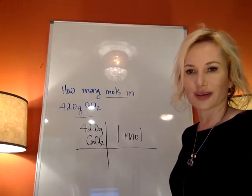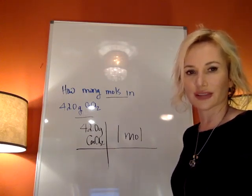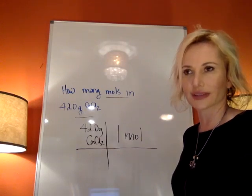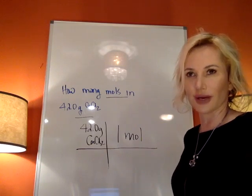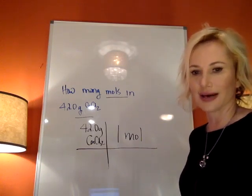Every single one of those boxes has 6.02 times 10 to the 23rd atoms in that box. We're only interested in grams here, so we have to use the bottom part of the periodic table where it has the mass.